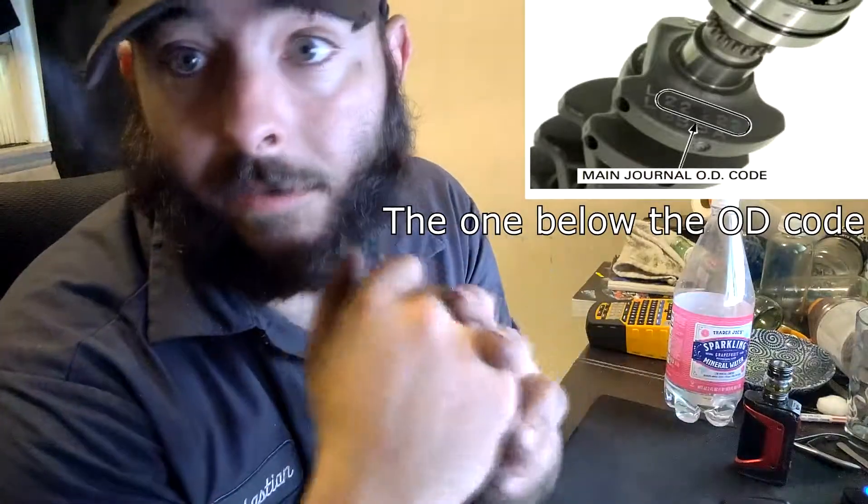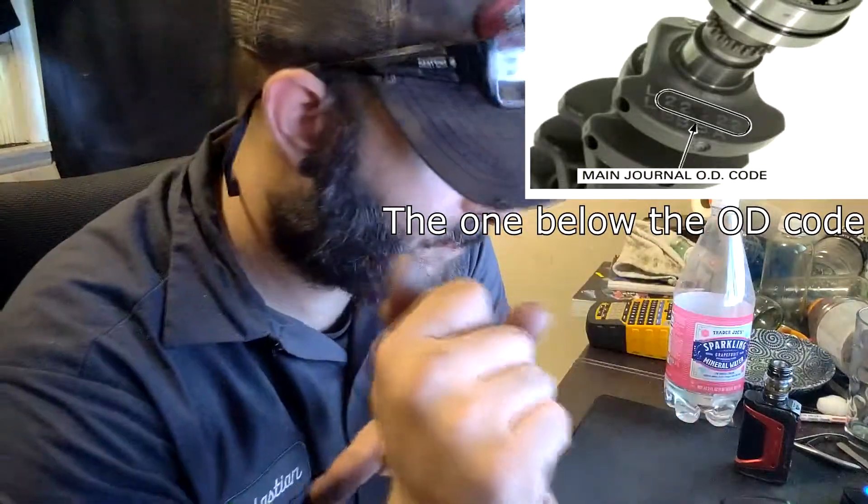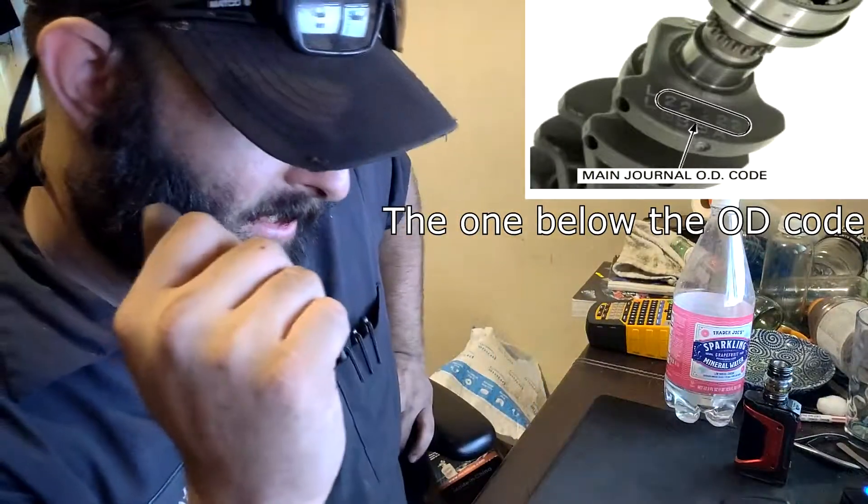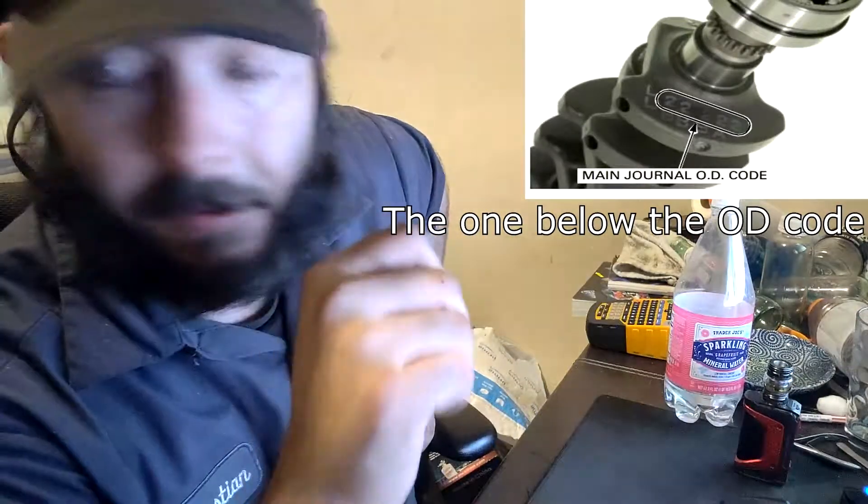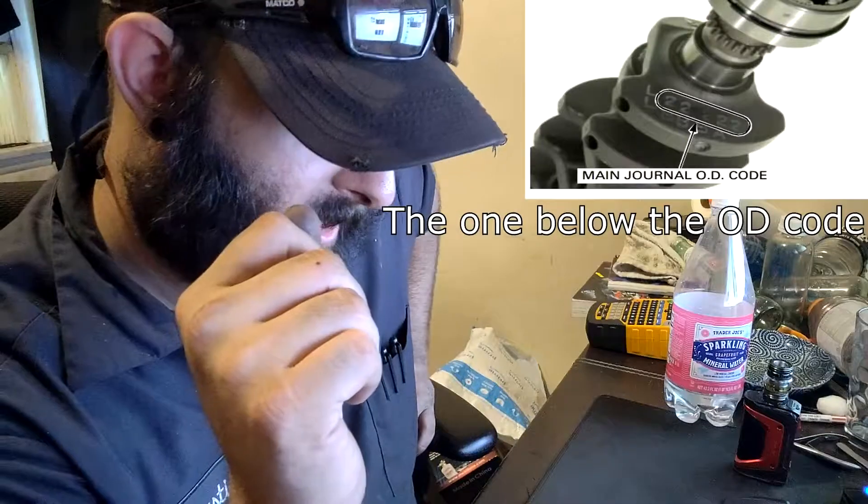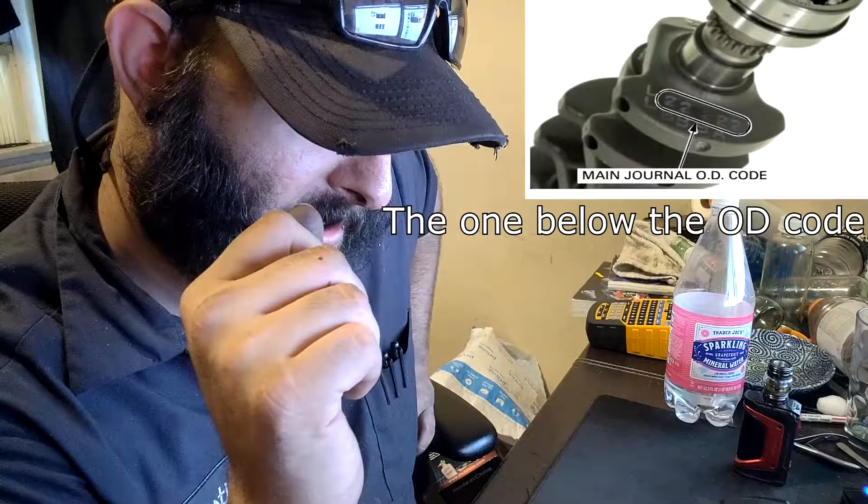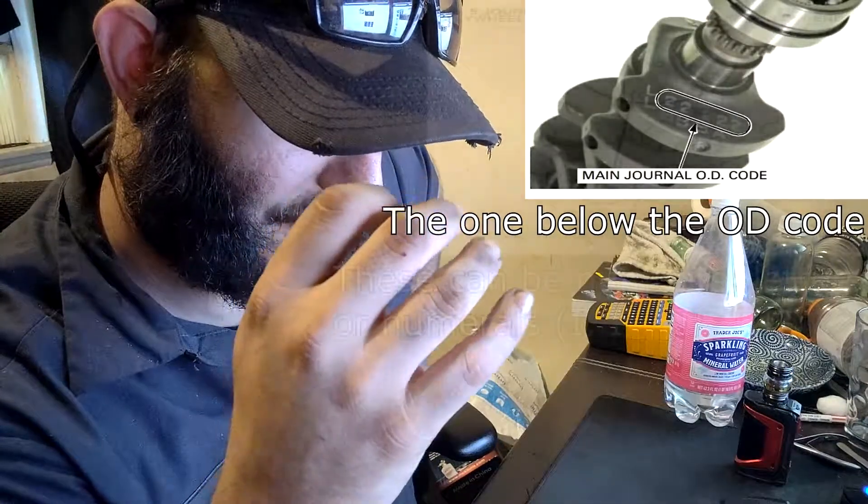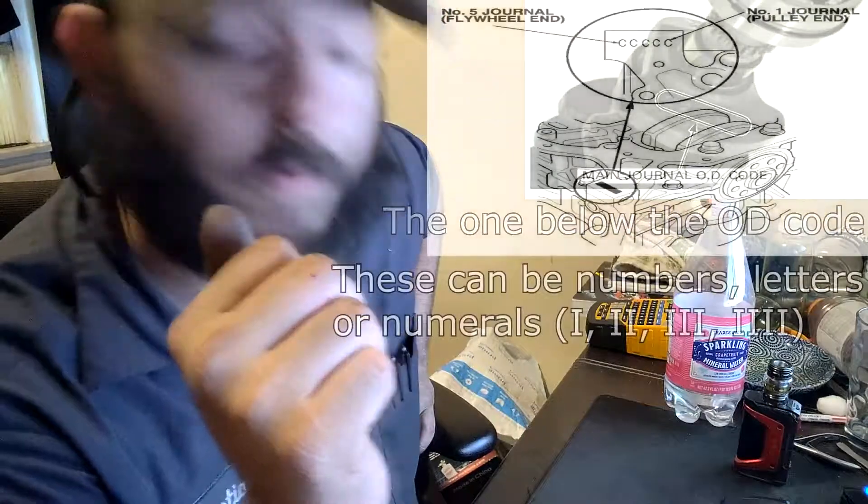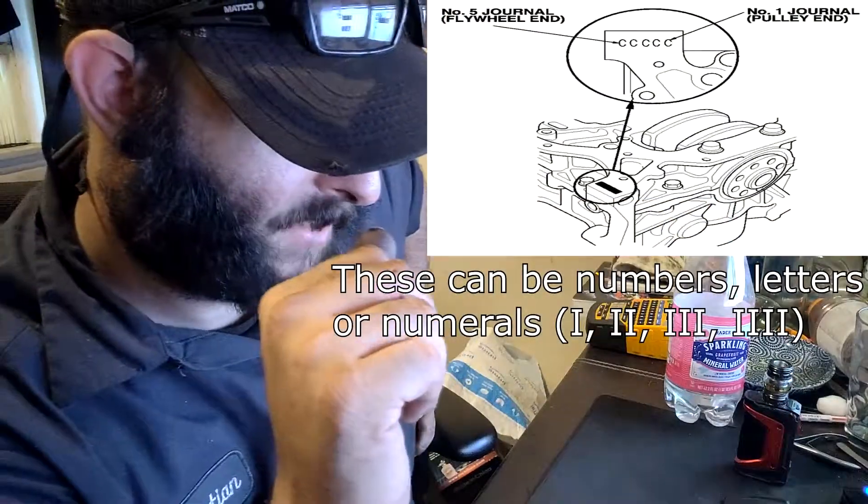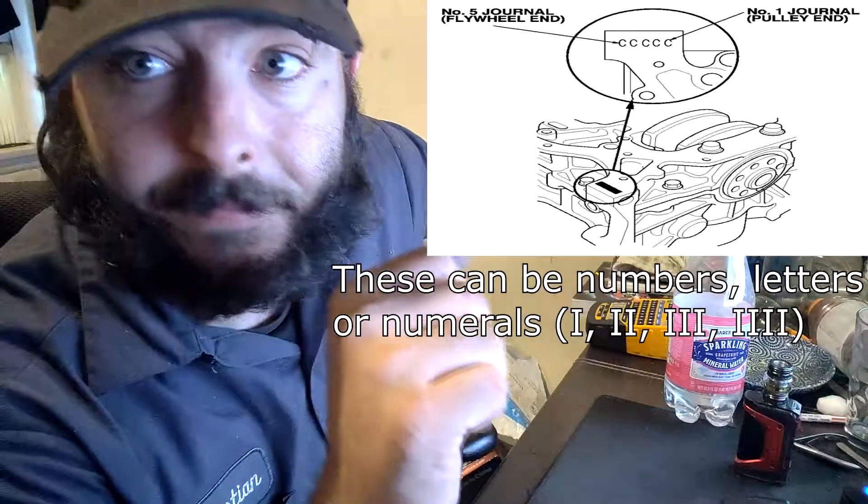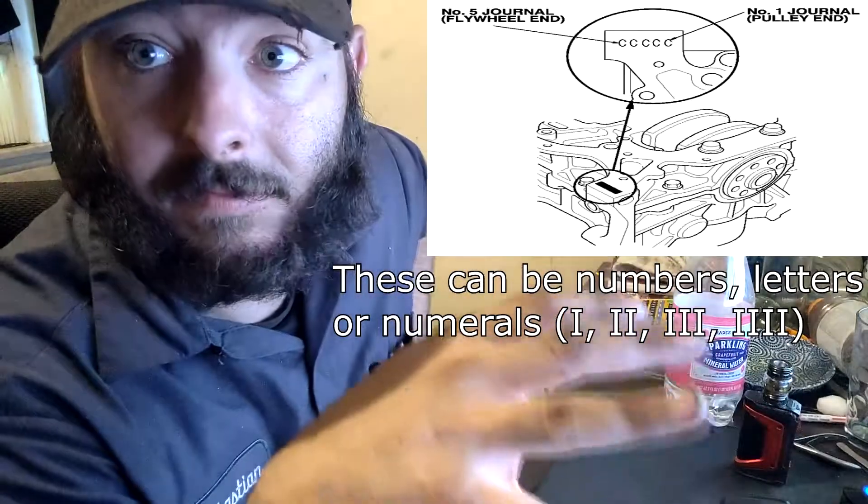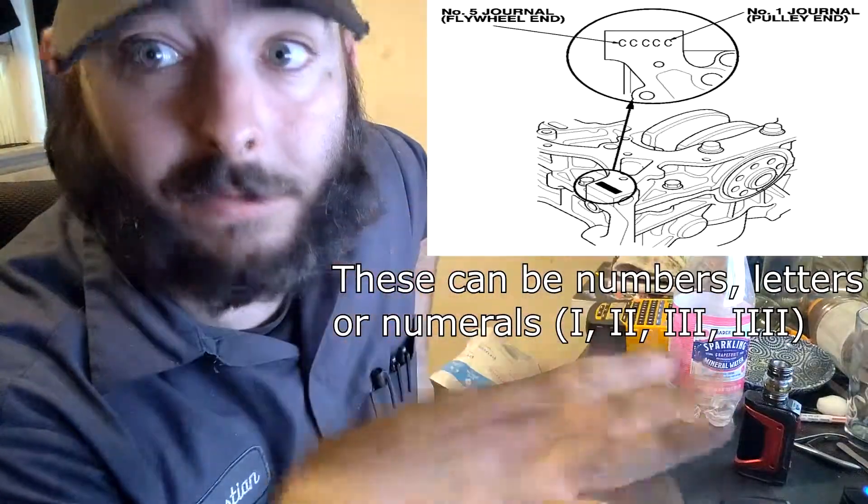There are four rod caps. On mine it is C C B C. My crank journal numbers are 4 4 4 3 3. Now on my girdle we have another five numbers or letters or marks.